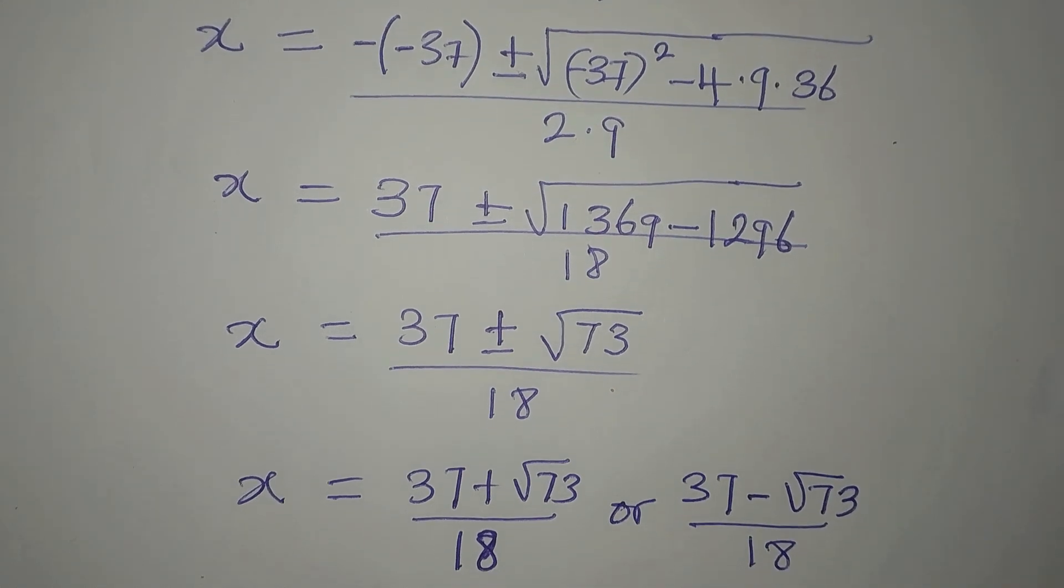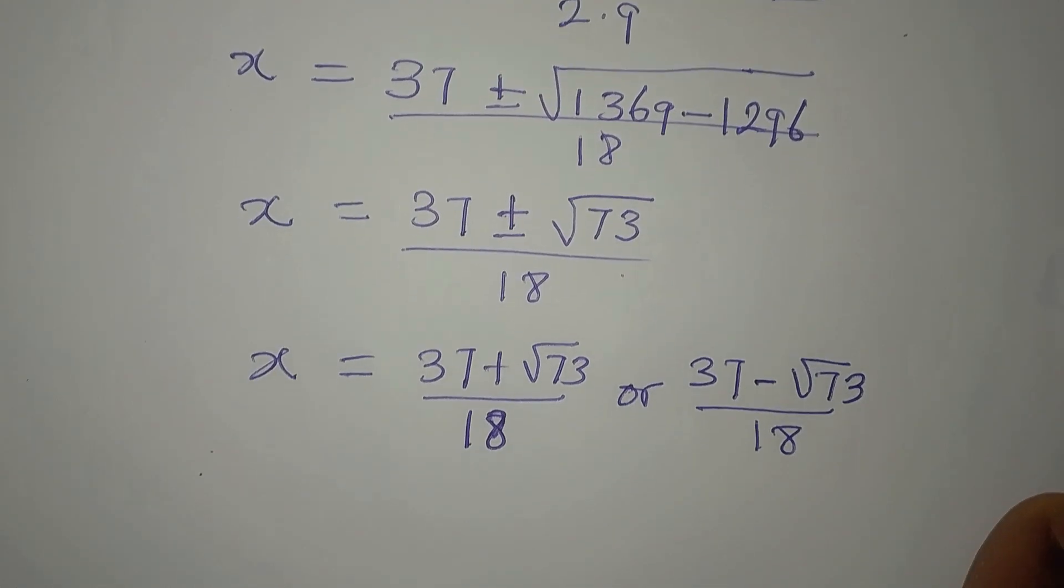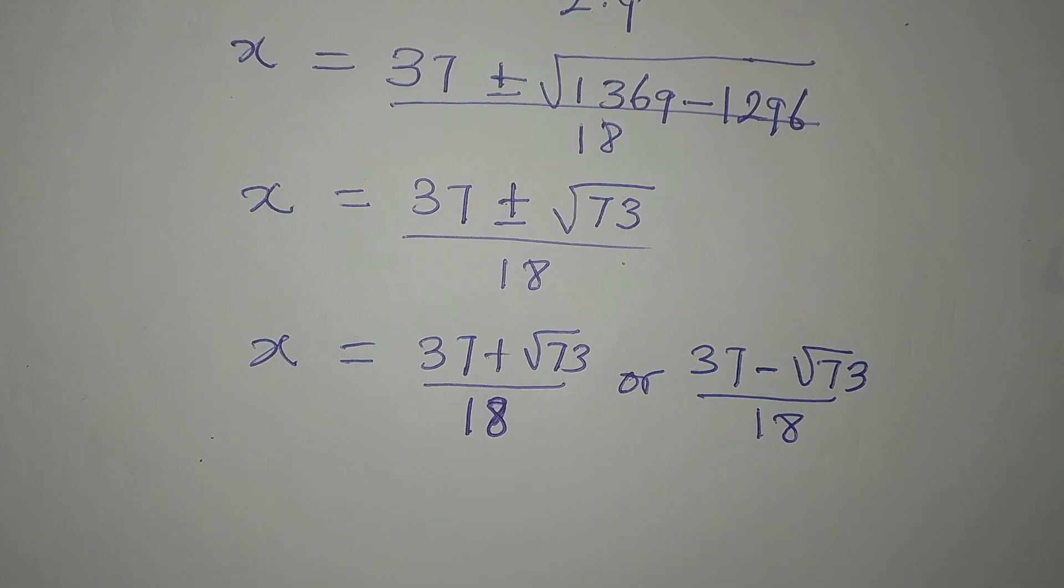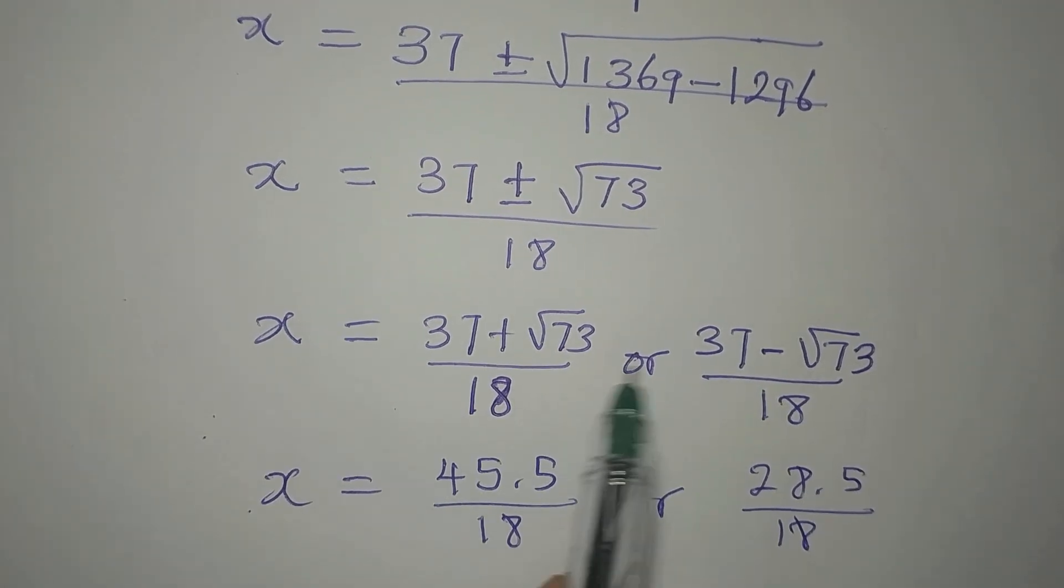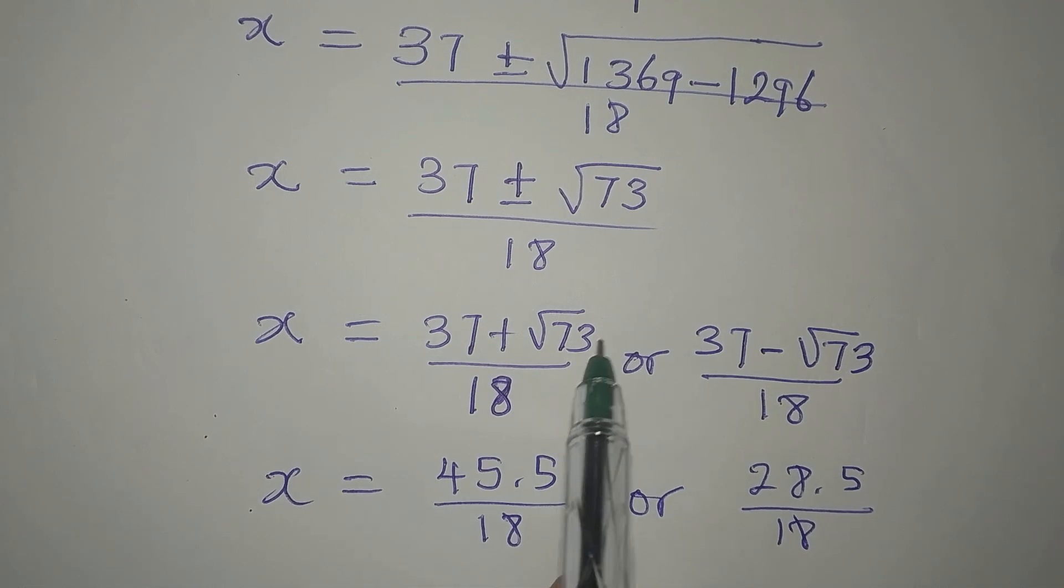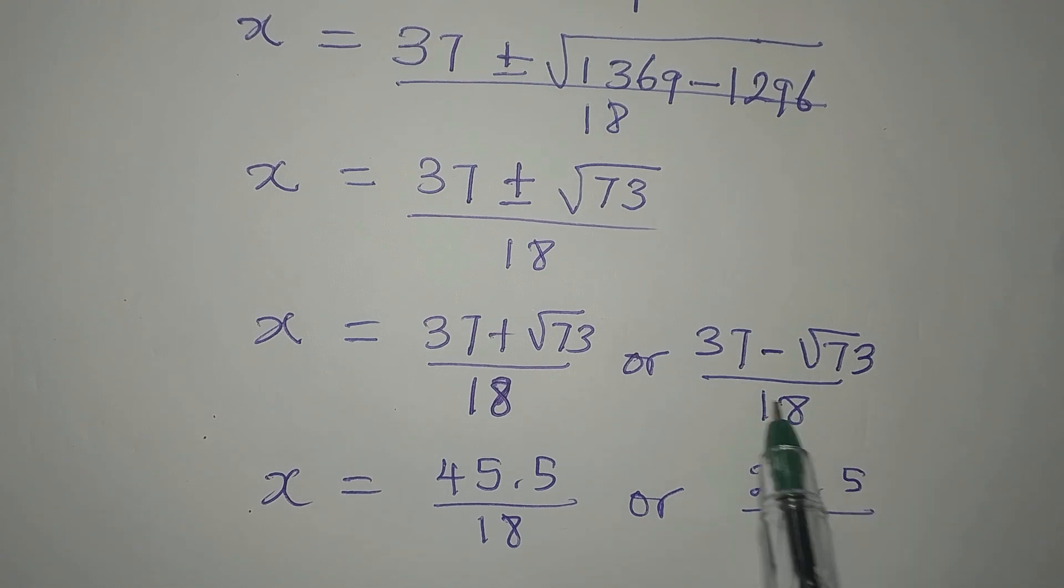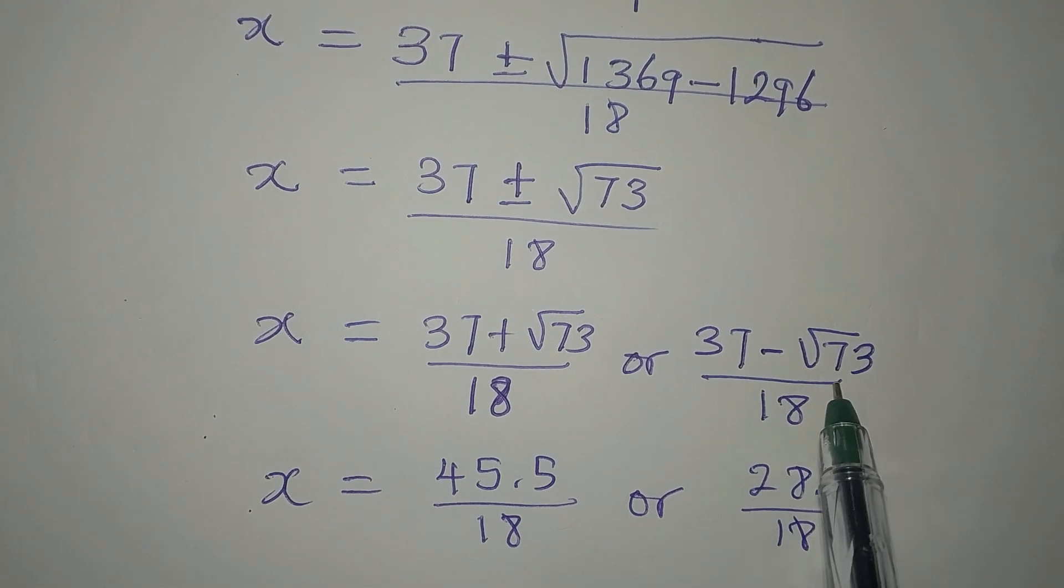And we are going to break this down, so that it will be faster for us. We'll use calculator to get the decimal form. 37 plus root of 73 is approximately what? So 37 plus root of 73 is 45.5 approximately, and then 37 minus root of 73 is 28.5 approximately.